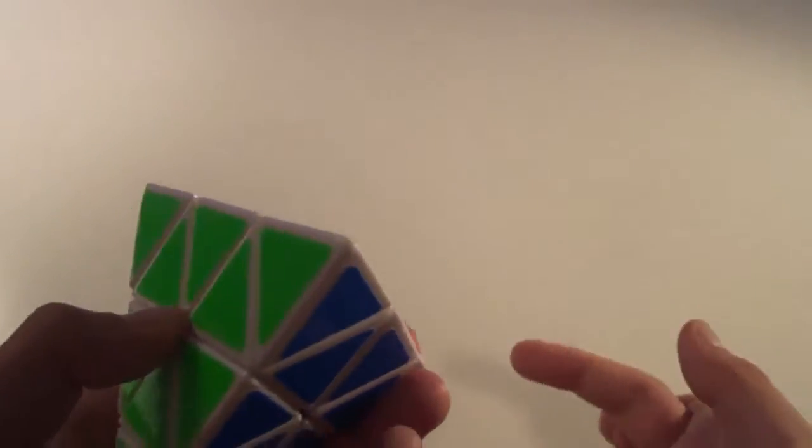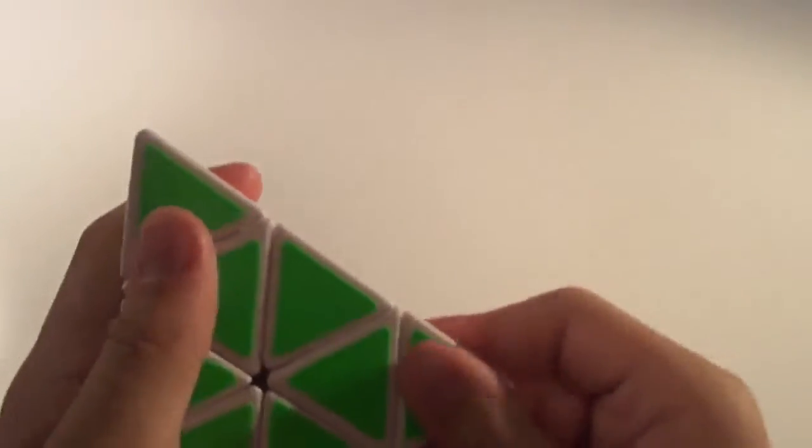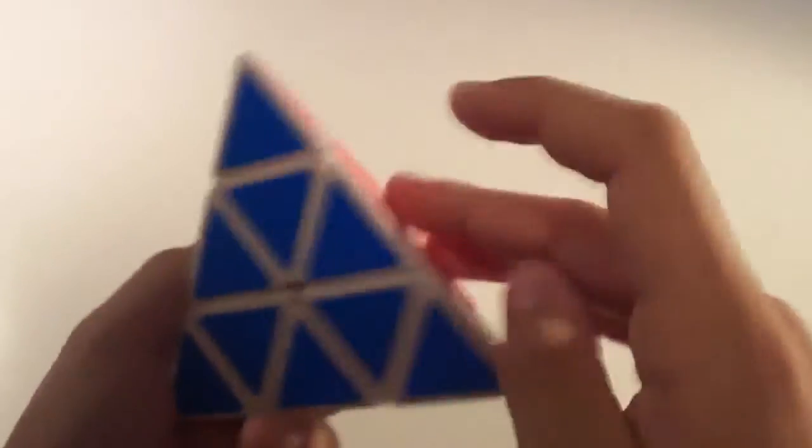These four pieces are the tips. They'll always be tips, as edges will always be edges, and centers will always be centers. And this tip, the green, red, and blue tip, will never be separated from the green, blue, and red centers, unless you take it off, like you pop the piece off, which is kind of hard to do, but you can pop it off and then move it, but that's technically not legal in cubing. So you can't really do that, so this will always be with these three centers, no matter what you do to it. Same with all the other tips.